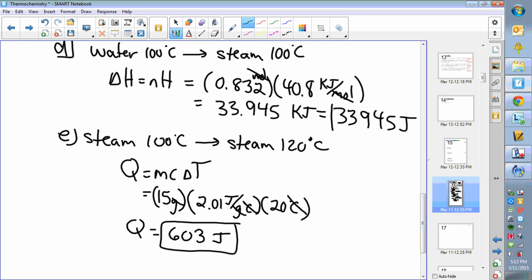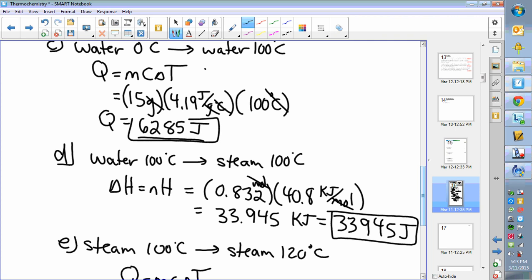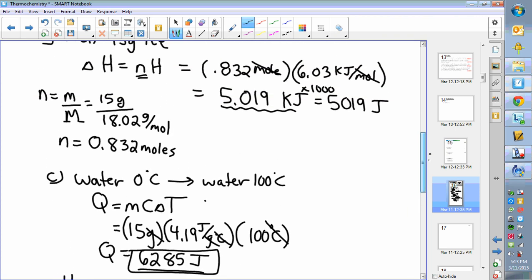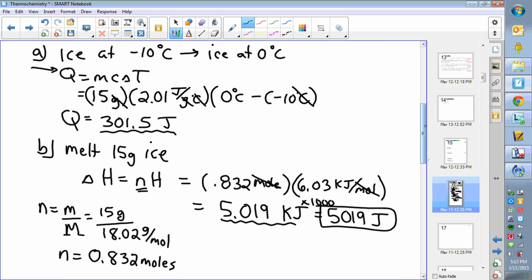To 33,945, to 6,285, to 5019, and lastly to 315. All of those numbers need to be added up to get the total energy.